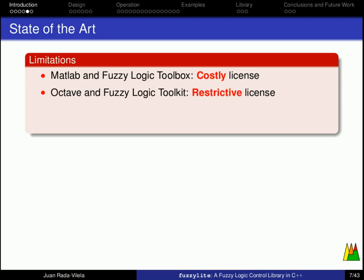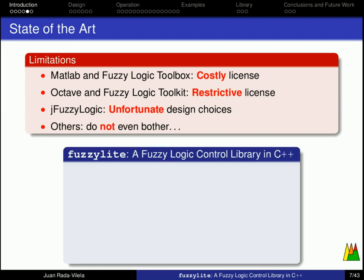Octave and its fuzzy logic toolkit, unfortunately they are doing the best they can to mimic MATLAB, but they are doing so with an open-source GPL license, which might prove restrictive for closed-source commercial applications. The people from JFuzzyLogic have made some unfortunate design choices along the way, and as for the other libraries, I have not seen one that is worth taking a look at. You can see why I started FuzzyLite in the first place.